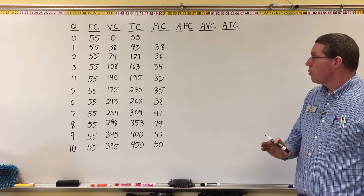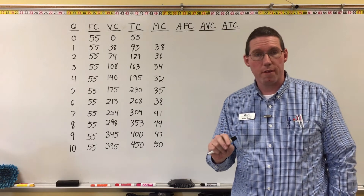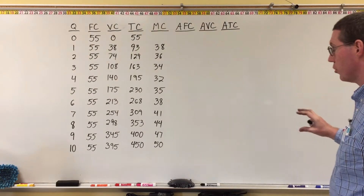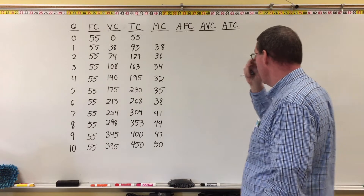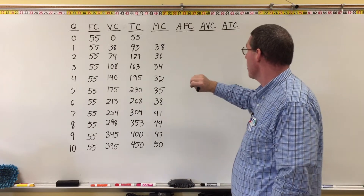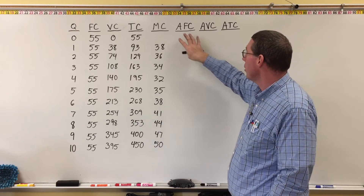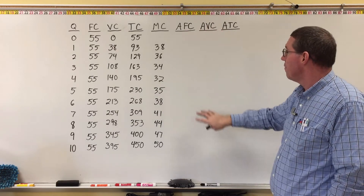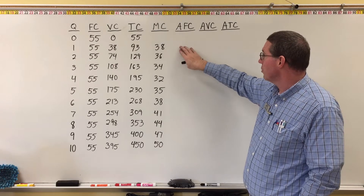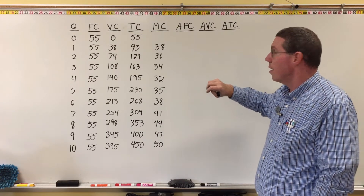What we're now going to do is try to understand the last two curves on this market structure set of graphs — average variable cost and average total cost. In order to understand them, I want to go ahead and fill in this table, finish it up with the costs, and calculate average fixed cost, average variable cost, and average total cost.